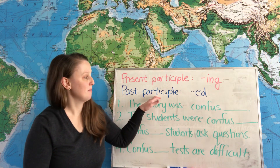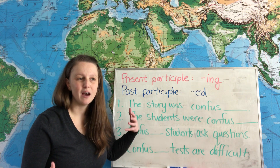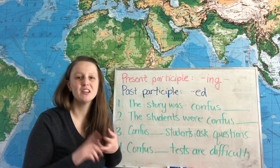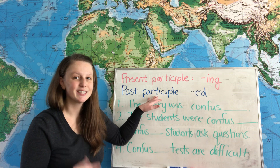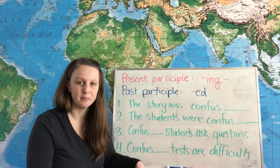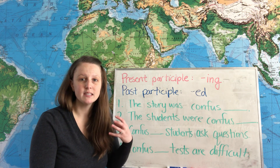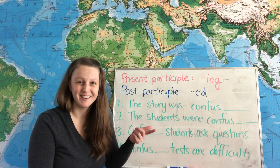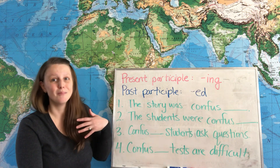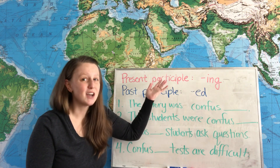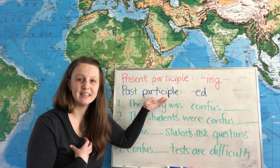We use the past participle form, like bored, to describe a feeling — usually how a person is feeling, whether they're bored, interested, or tired. We use the past participle for those feelings. And we use the present participle to talk about the thing that causes that feeling. Something is boring, interesting, or tiring. The present participle describes the cause of the feeling, and the past participle describes the actual feeling that you have.